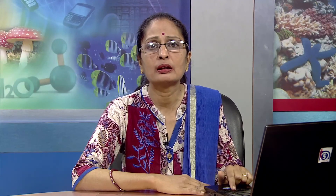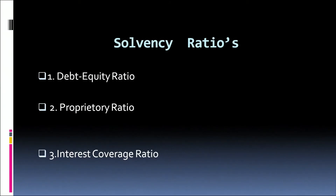Now we move on to the second part of today's session — solvency ratios. When we talk of solvency ratios, we are talking of long-term obligations or long-term payments which the firm needs to meet for the various purposes for which it has obtained loans. It indicates a firm's ability to meet fixed interest costs and repayment schedules associated with its long-term borrowings. Today we will study three solvency ratios: the debt equity ratio, the proprietary ratio, and the interest coverage ratio.